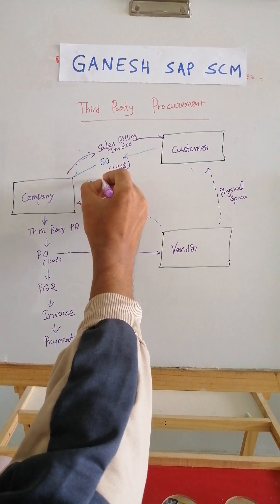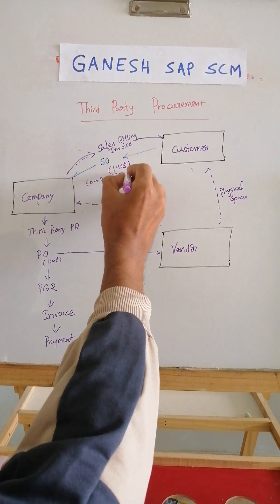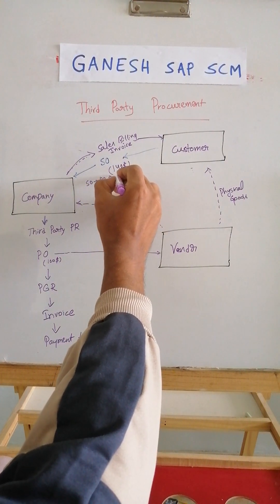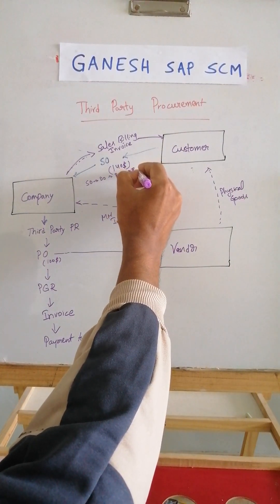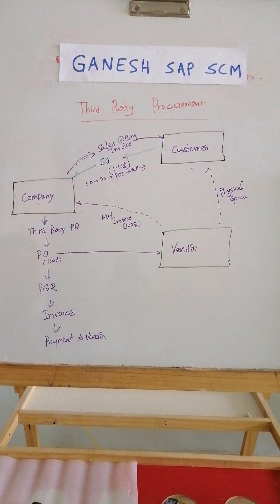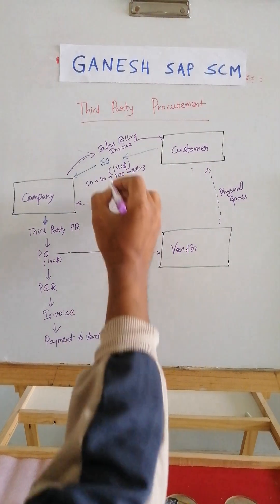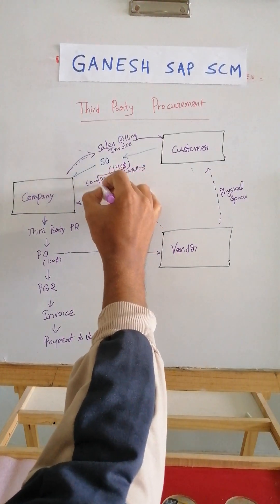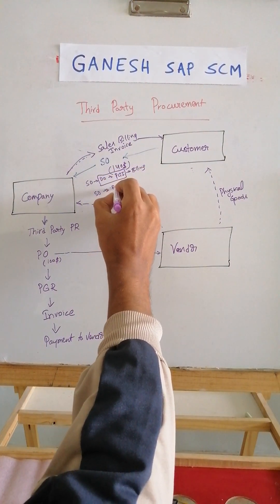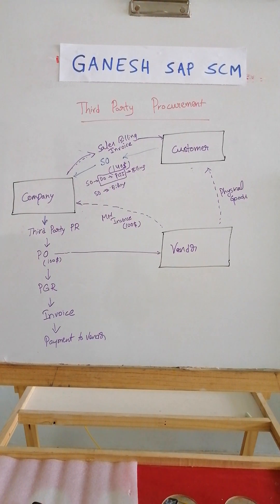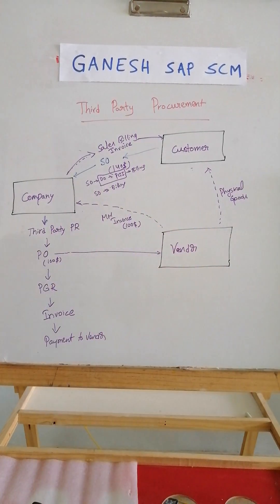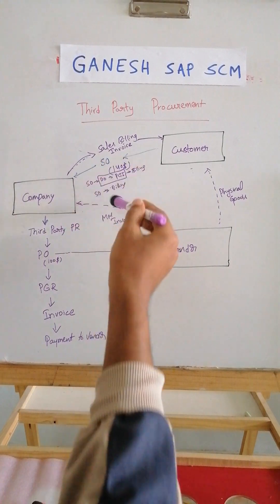If you use a delivery order, then you do PGI and then billing. However, in another business process variant, there is no delivery or PGI — it goes directly from sales order to billing. This is handled with a new account assignment category on the PO so there is no stock tracking. Once the goods are received at the customer, the invoice will be posted.